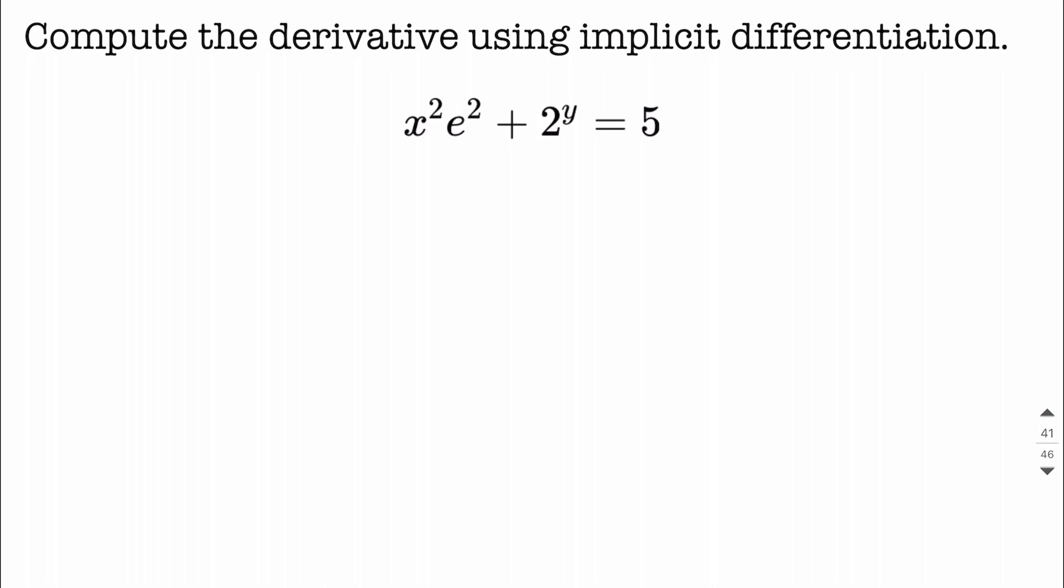Let's go ahead and find this derivative using implicit differentiation. So on this example, we want to note that e squared is really a constant, and constants are going to come along as we take derivatives.